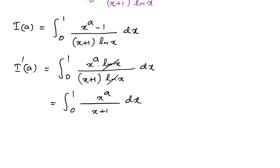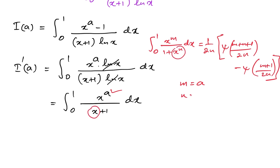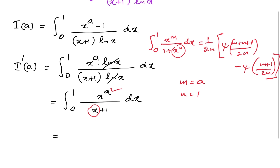We previously solved the integral from 0 to 1 of x to the m over (1 plus x to the n) dx, which equals 1 over (2n) times [digamma of (m plus n plus 1) over (2n) minus digamma of (m plus 1) over (2n)]. Comparing with our integral, m equals a and n equals 1.